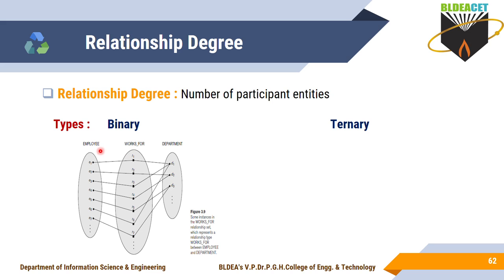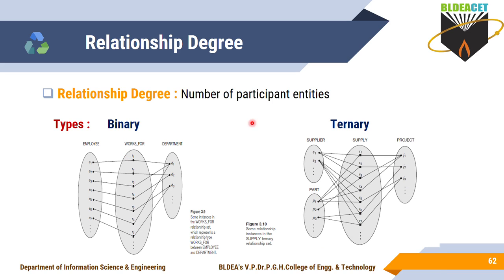When two entity types participate in a relationship, we call it binary — degree is 2. In the same way, for ternary, three entity types must be involved. For example, Supplier, Part, and Project are three entity types all related with the 'Supply' relationship type, so the degree of that relationship is three — ternary.